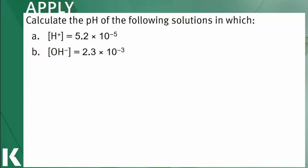In this applied question, we're asked to calculate the pH of the following solutions. In A, the concentration of hydrogen ions is 5.2 times 10 to the minus 5. What equation relates hydrogen ion concentration and pH?